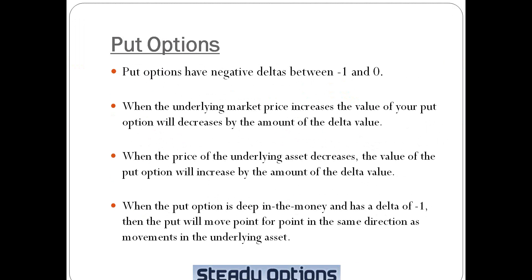Put options basically behave exactly the opposite. They have negative deltas between minus 1 and 0, or between minus 100 and 0 — exactly the same thing. When the underlying market price increases, the value of your put will decrease by the amount of the Delta value. And when the price of the underlying asset decreases, the value of the put option will increase by the amount of the Delta value. So when you have puts, you want the underlying asset to go down, and when you have calls, you want it to go up. When the put option is deep in the money and has a Delta of minus 1, then the put will move point for point in the same direction as movements in the underlying asset.